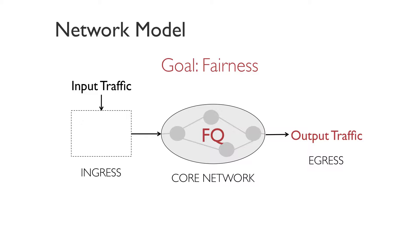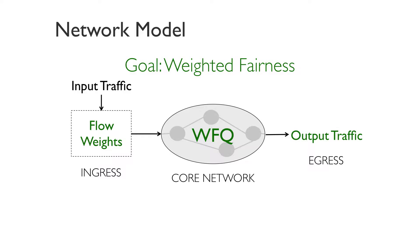For example, if our goal is to minimize mean flow completion time, we emulate something like shortest-job-first by running priority scheduling in the routers, with headers carrying priority values depicting flow size. If our goal is fairness, we run fair queuing. For weighted fairness, we use weighted fair queuing with headers carrying flow weights, and so on.